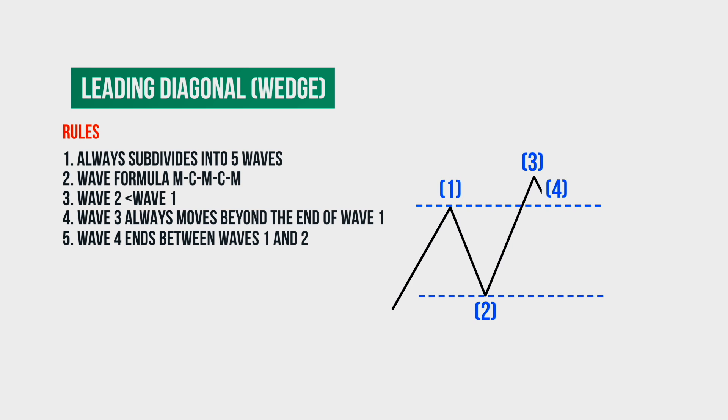If wave four ends above the top line drawn through the top of wave one, then this model will take the form of a non-leading diagonal. It will be just an impulse. And if in its construction wave four goes below the horizontal line drawn through the top of wave two, then the structure of the wave will be broken and this model will not be the leading diagonal at all.